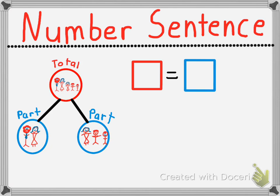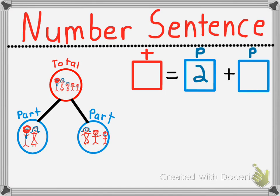Let's take a look at our number sentence. First, we have the red, which is the total. We're going to put our equal sign first this time, and then it's made up of the two parts. The red is the total — T for total — and the blue is the two parts. So remember, the parts we have are two adults and three children, and we're going to add them together to make a total of five. Notice that the total is first, then the equal sign, and then the two parts in this number sentence.